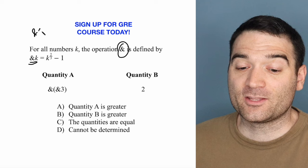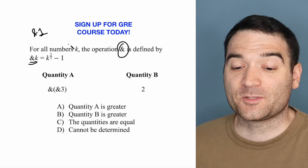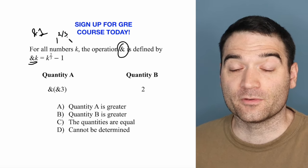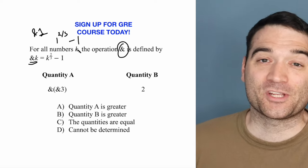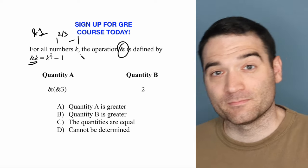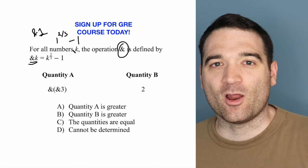So, for instance, if I took ampersand one, that's basically just saying take one to the power of two-thirds and subtract one. If I did ampersand two, it's two to the power of two-thirds minus one, and on and on.